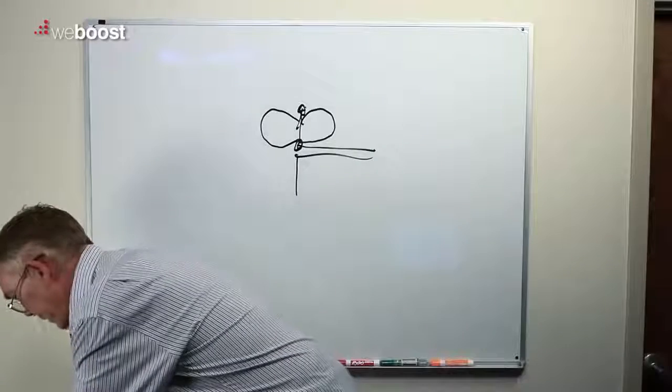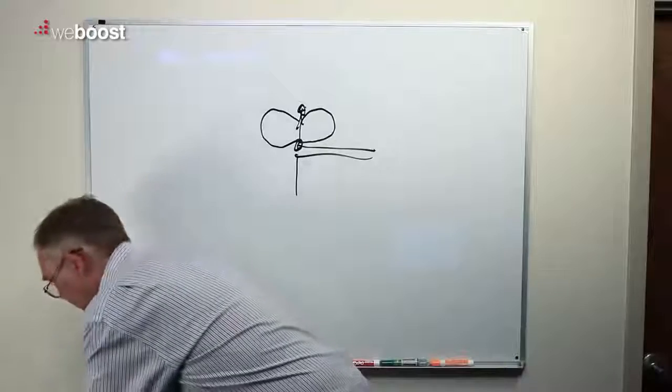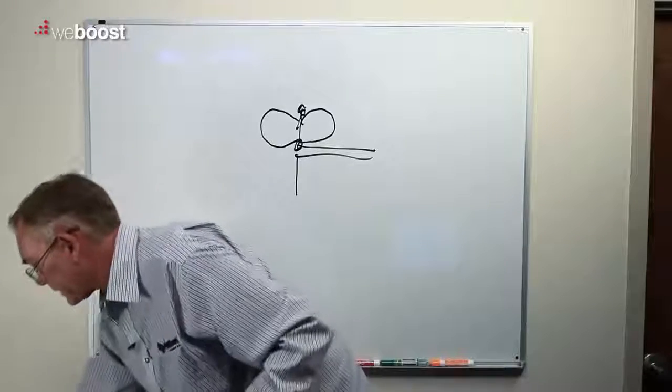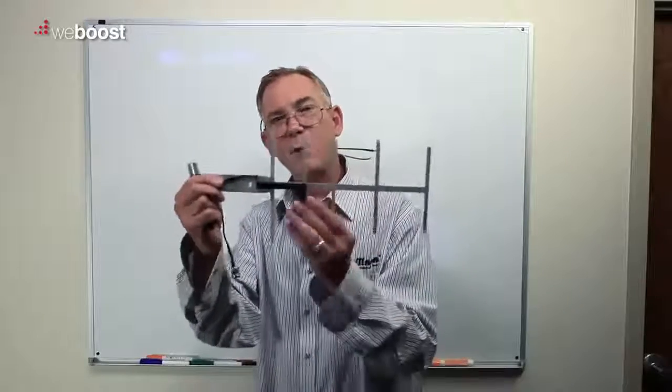For a directional antenna, the easiest antenna to talk about for a directional antenna is a Yagi antenna. And this is a Yagi antenna. It's pretty simple.